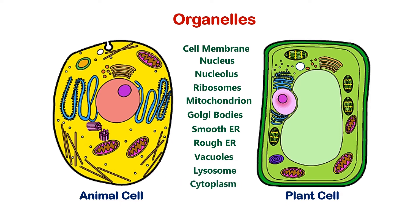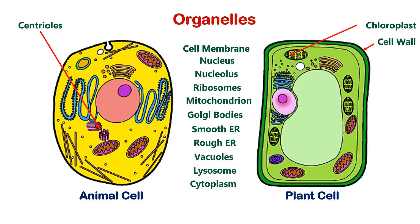On the other hand, the organelles present only in animal cells are centrioles, while the organelles found only in plant cells are chloroplasts and cell wall.